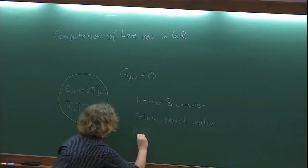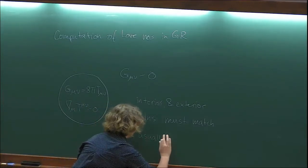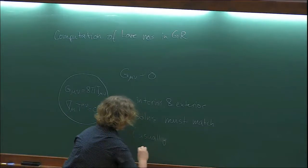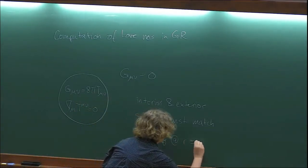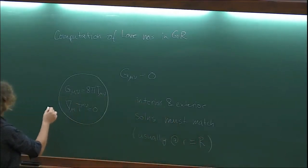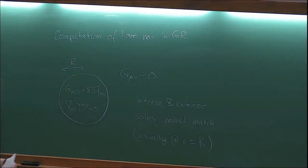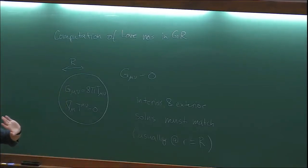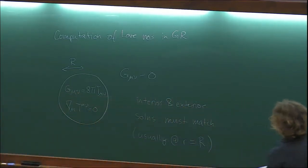Outside, all we have to solve is the vacuum Einstein's equations: G_μν = 0. We compute a solution in the interior and a solution in the exterior, and then we match them at the surface because the solution should be continuous. Interior and exterior solutions must match — we impose this condition, choosing the matching at r = R, where R is the radius of the object. Sometimes you have objects without a well-defined surface, so you cannot impose it exactly at the surface.